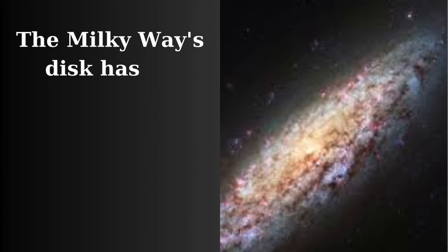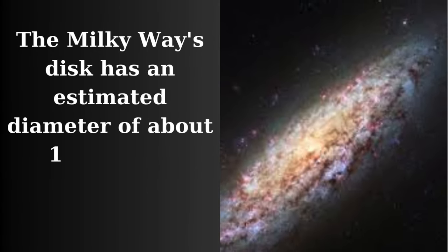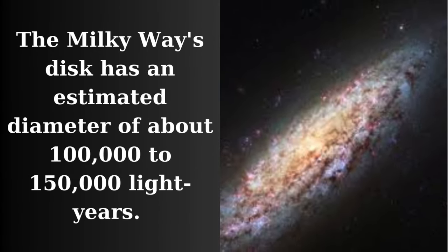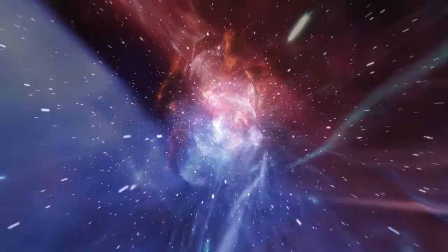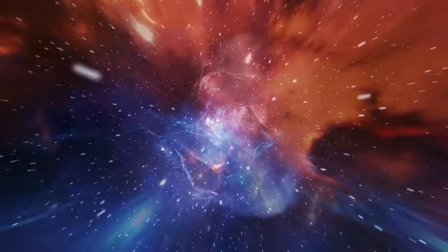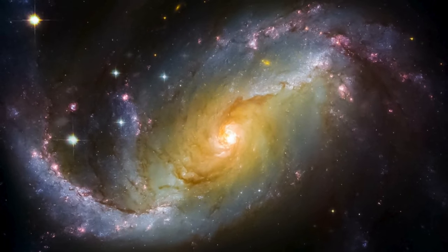The Milky Way's disk has an estimated diameter of about 100,000 to 150,000 light years. This means that light, travelling at 299,792 kilometers per second, will take 100,000 to 150,000 years to travel across the entire width of the galaxy.